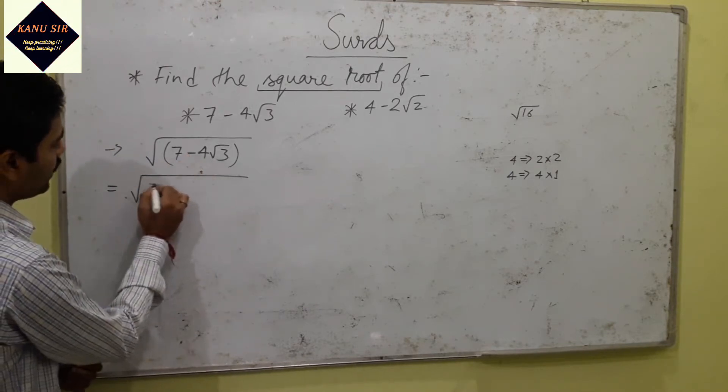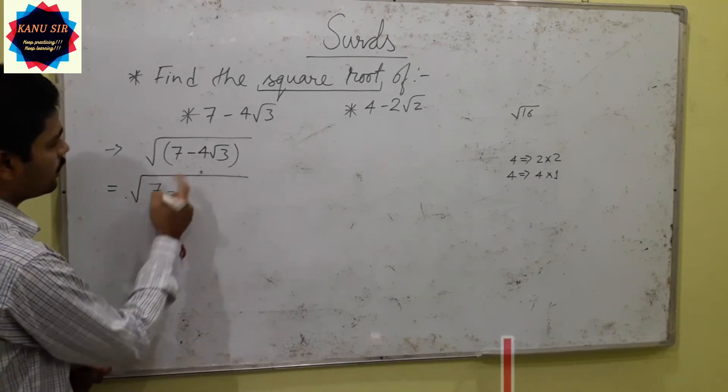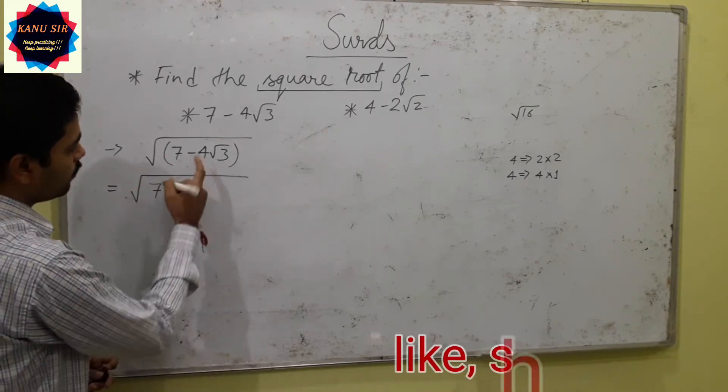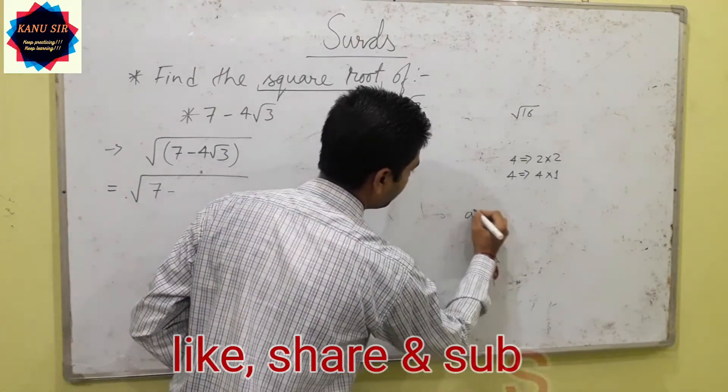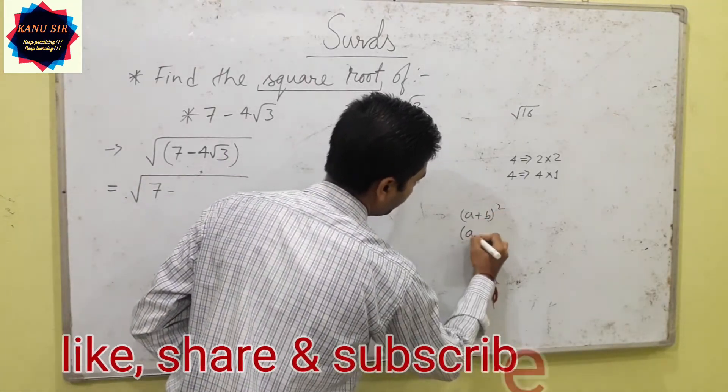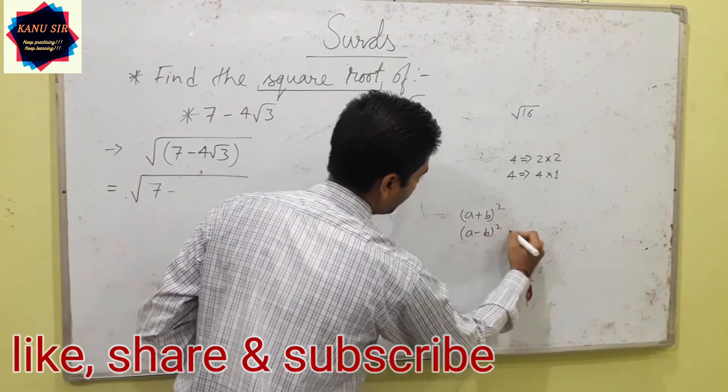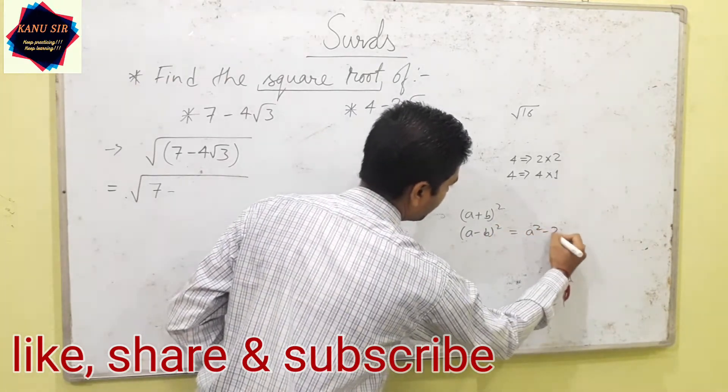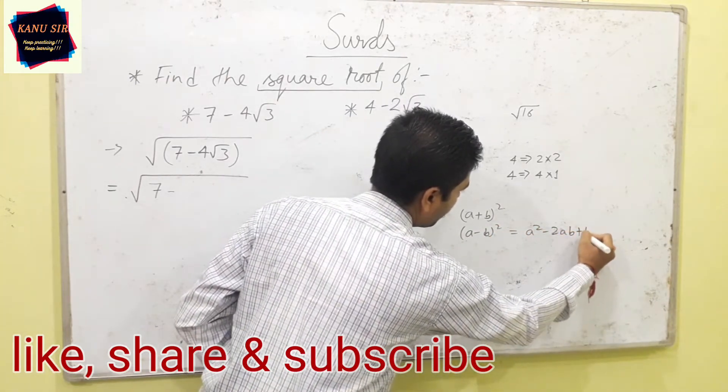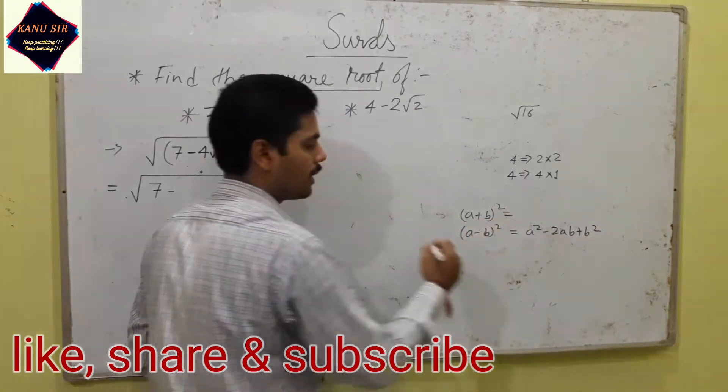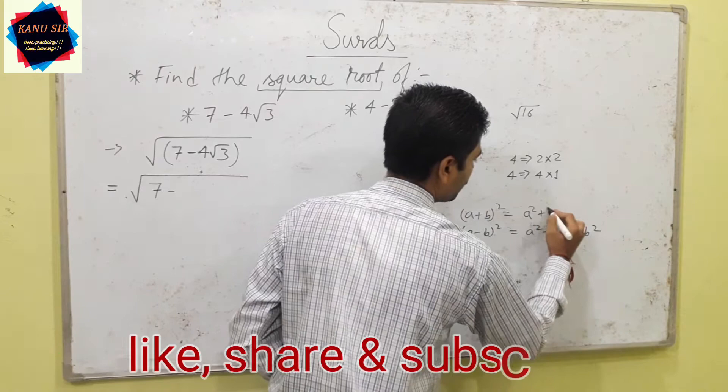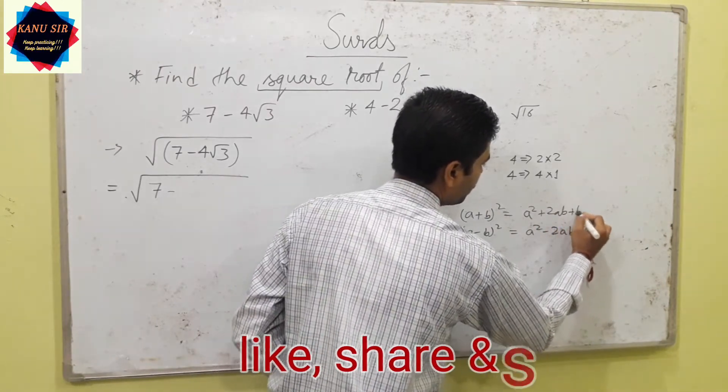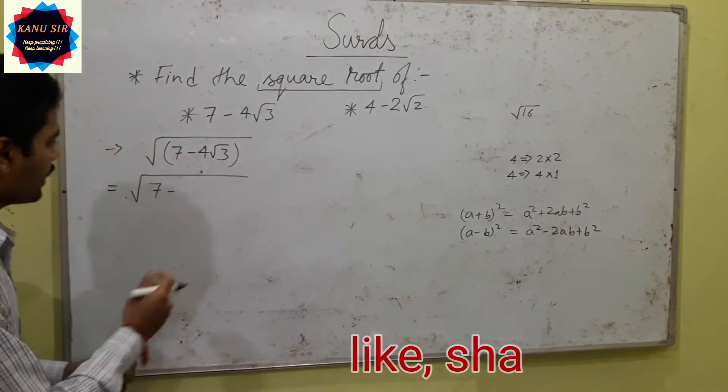We have no idea about 7 yet. For 4 you can check. Here we are trying to make a plus b whole square or a minus b whole square. In the formula of a minus b whole square there is a² minus 2ab plus b², and in the formula of a plus b whole square we have a² plus 2ab plus b². Let's come back again.